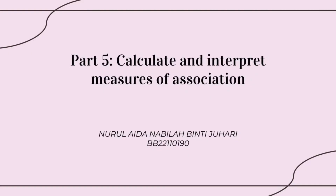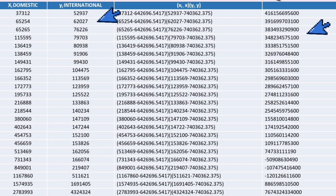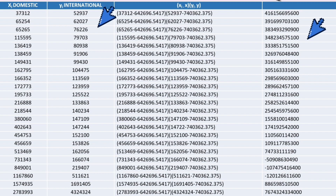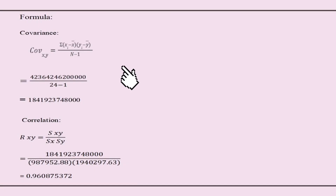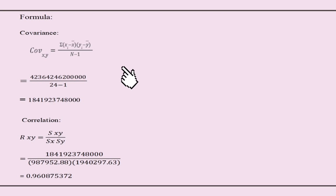Hello, my name is Nurul Aidanabila Binti Jawari, my matrix number is BB22110190, and I will present part 5, which is calculating and interpreting measures of association. As you can see in the table, I have arranged the data from small to large numbers for each domestic and international dataset. I used the covariance formula to calculate the data, and the total answer is divided by n minus 1, which is 24 minus 1. For example, 423,642,462,000,000 divided by 23 gives a final covariance answer of 1,841,923,748,000.